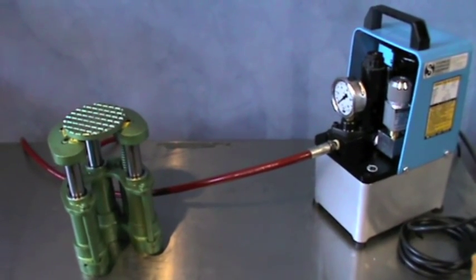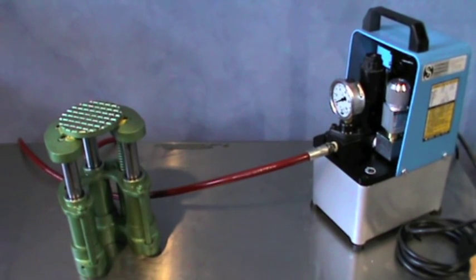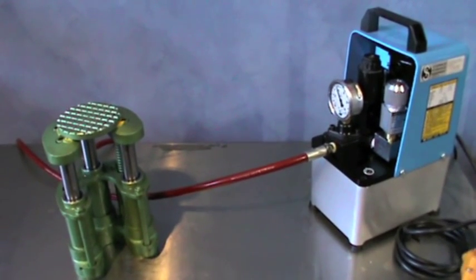Such items that these pumps can power are cylinders, jacks, spreaders, hole punchers, bar cutters and benders.